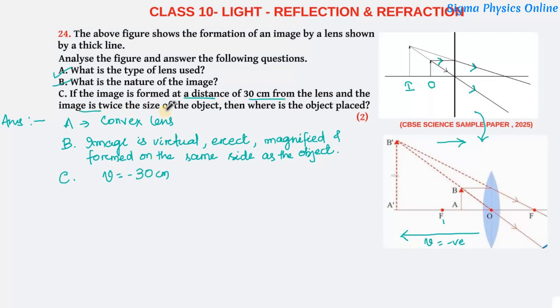Then it's given that the image is twice the size of the object. That means the height of the image by height of the object is 2. From the magnification formula for a lens, magnification equals height of image by height of object, which equals image distance by object distance, which is 2. So from this we see that V equals twice U. Using this condition we will find out the object distance.